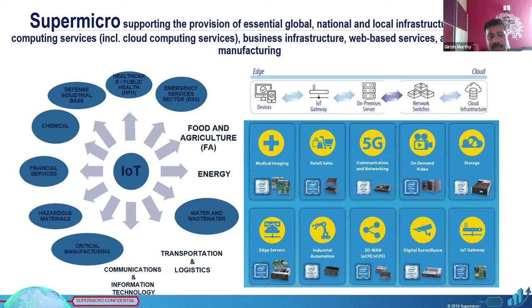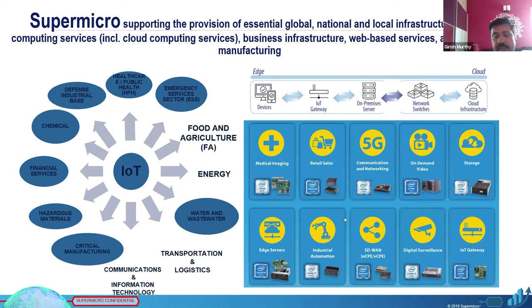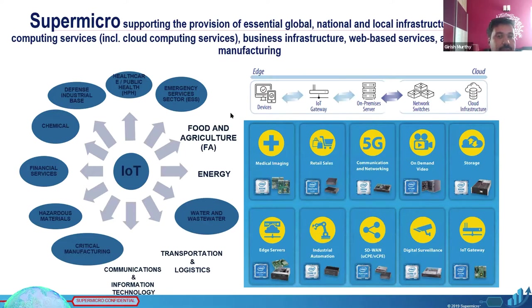Earlier it was fine, but now people are doing video analytics and a lot of other things on the edge itself. These are some of the application areas where IoT or edge devices are used: financial, critical manufacturing, emergency services, healthcare, defense, industrial, and 5G. Edge devices need intelligence with some amount of compute, storage, and network to perform and give better results rather than being solely dependent on the cloud.